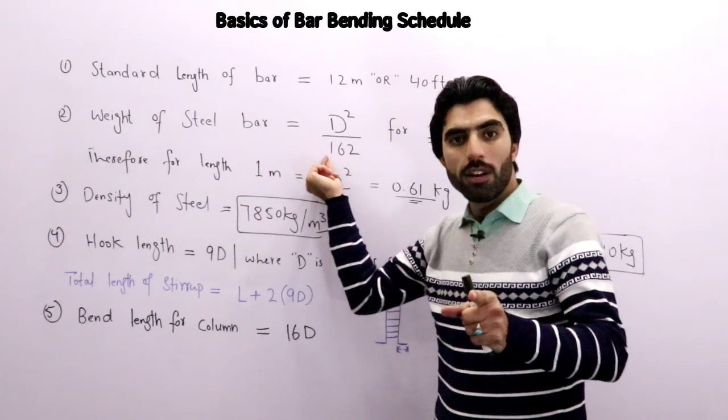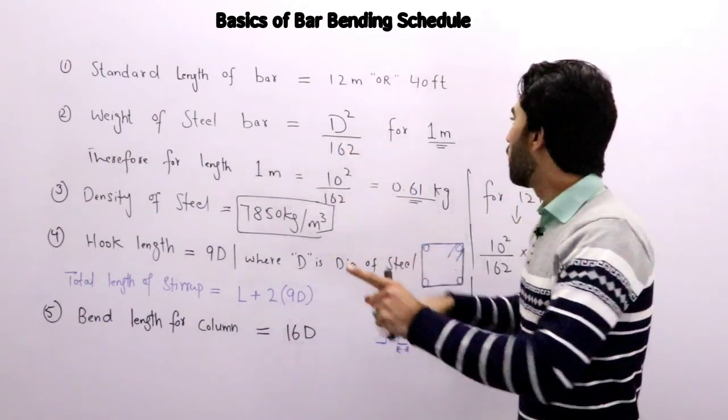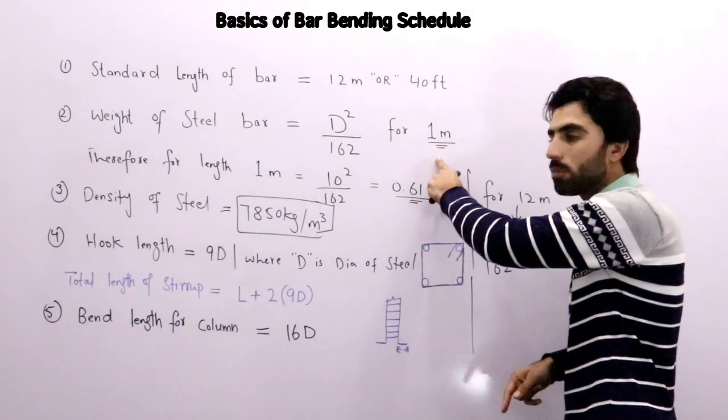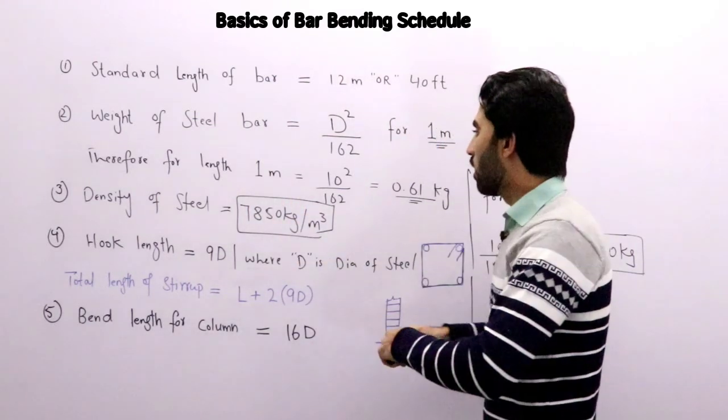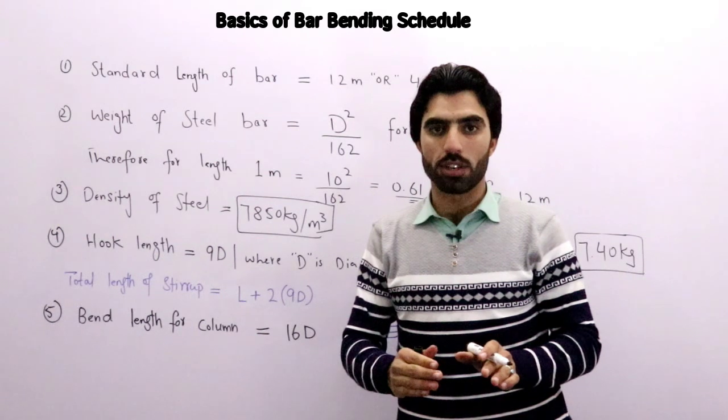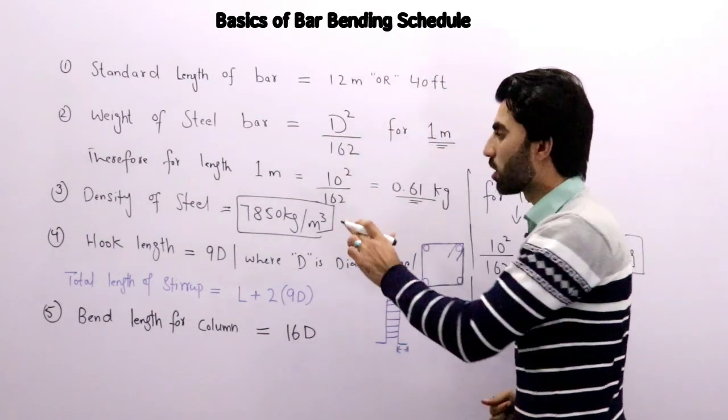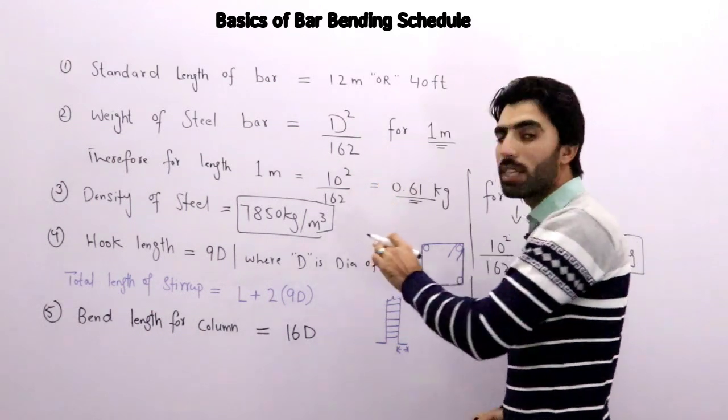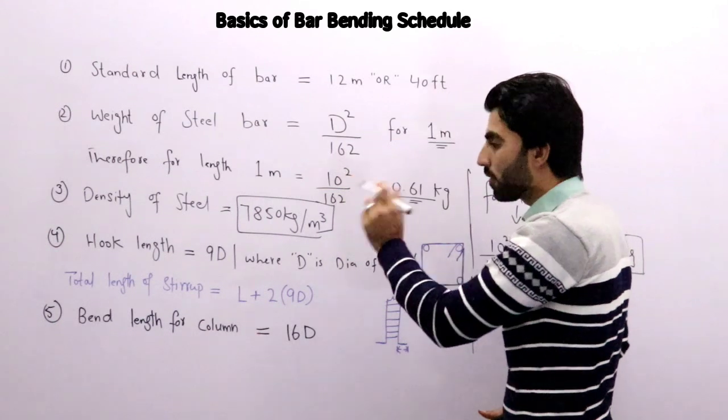But never forget one thing: D should be in millimeter for one meter. Therefore, if I want to find weight of steel for 12 millimeter for one meter, D should be in millimeter. For example, I have to find weight of steel for 10 millimeter steel bar.